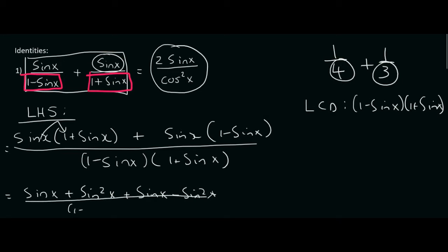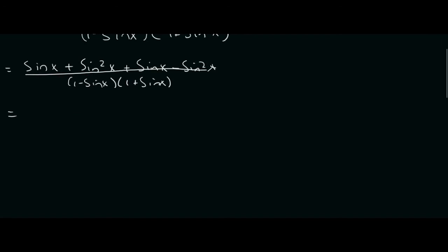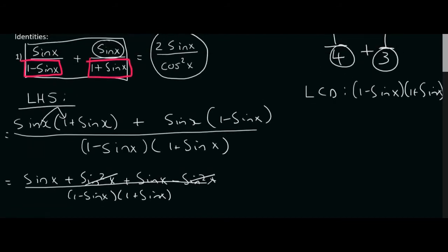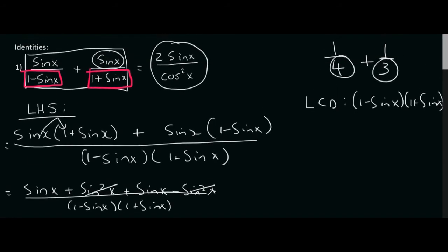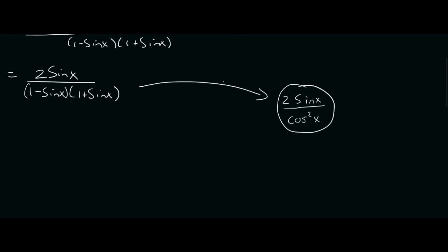Remember, you don't want to multiply out the denominator. What we can see at the top is that the sin squared x terms cancel, so at the top we're left with two sin x over one minus sin x times one plus sin x. Now if we compare what we have to what we are trying to get, we can see that the two sin x is in place.